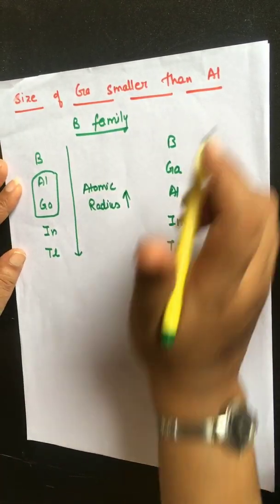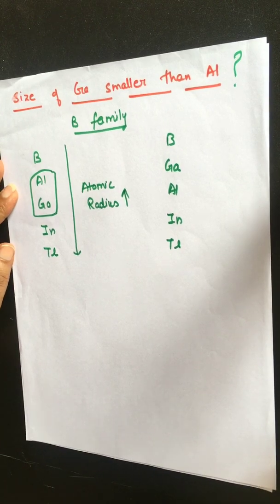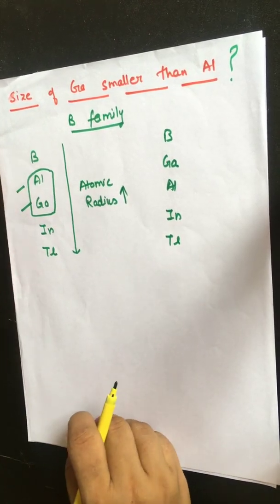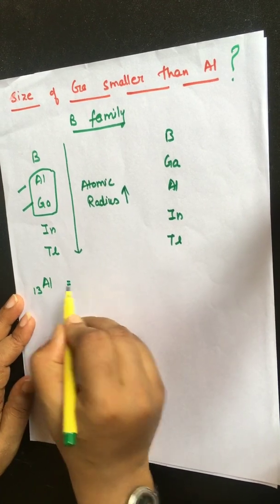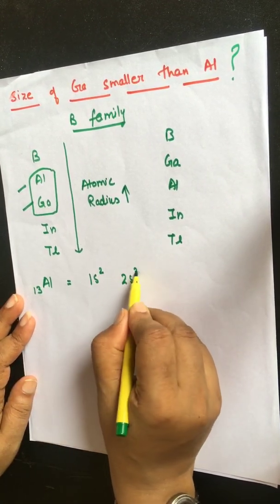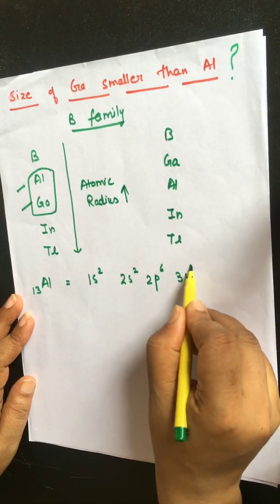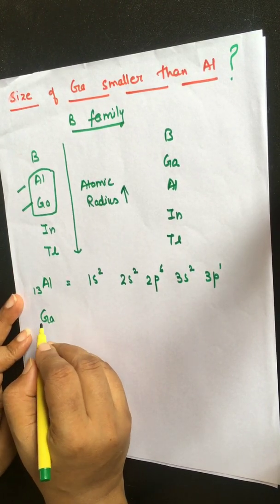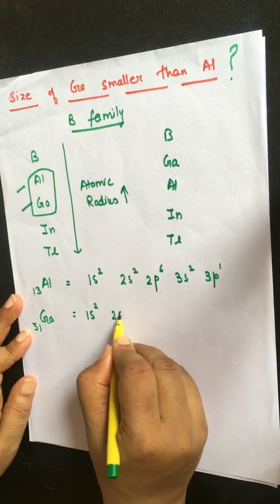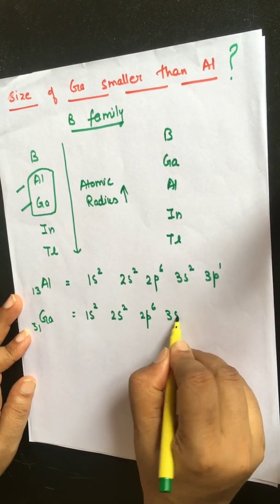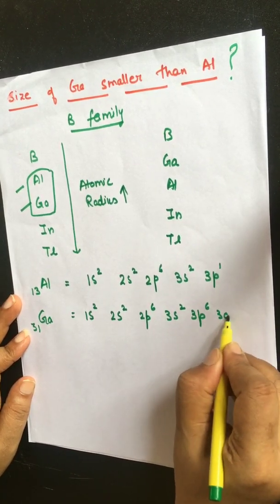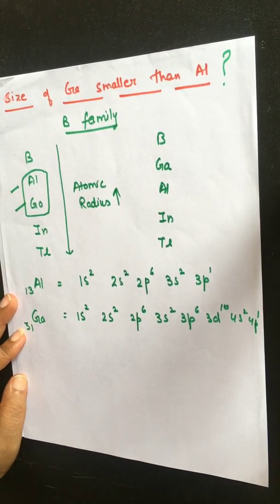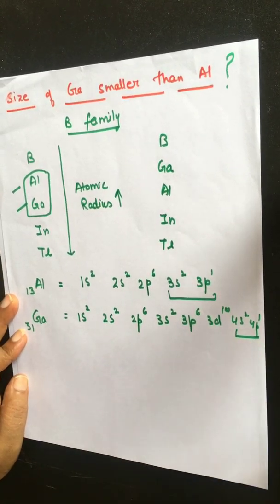So today's topic is: why is the size of gallium smaller than aluminium? First, let's look at their electronic configurations. Aluminium has atomic number 13, with configuration 1s² 2s² 2p⁶ 3s² 3p¹. Gallium has atomic number 31, with configuration 1s² 2s² 2p⁶ 3s² 3p⁶ 3d¹⁰ 4s² 4p¹. The outermost shell has 3 electrons in both, which is why both are in group 13.